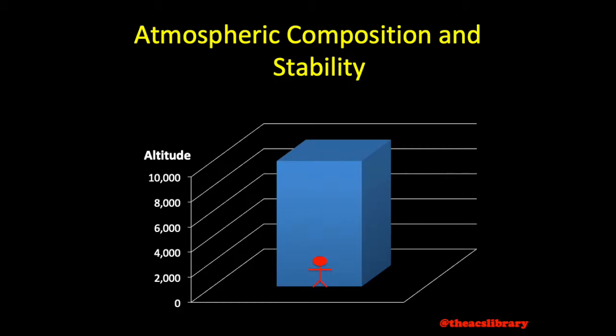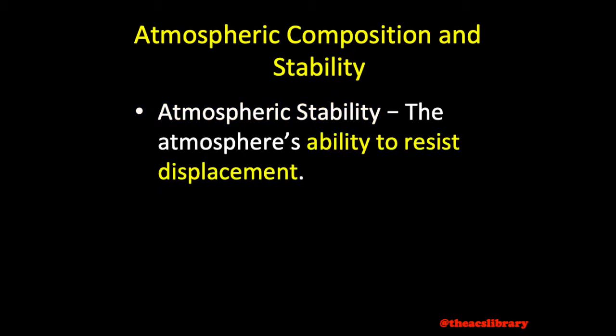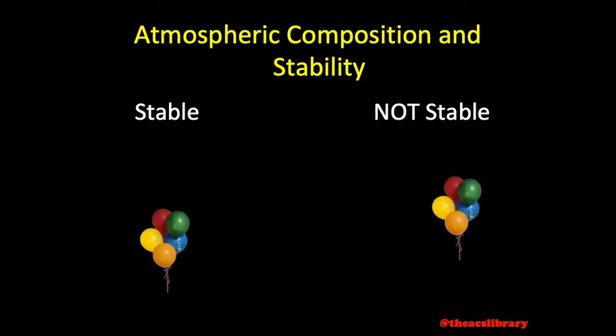The final concept of the atmosphere we will discuss is atmospheric stability. Just as with an aircraft, the stability of the atmosphere refers to its ability to resist change when disturbed. A stable atmosphere will resist any upward or downward displacement, otherwise known as convection. An unstable atmosphere allows upward and downward disturbances to develop into a vertical or convective current.